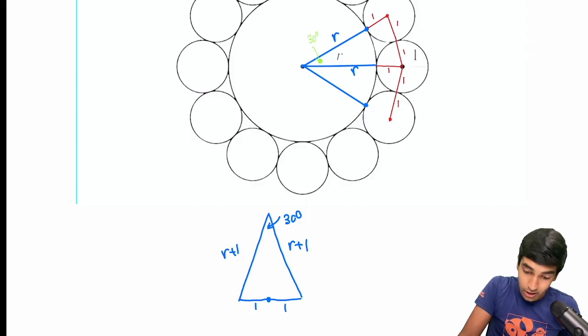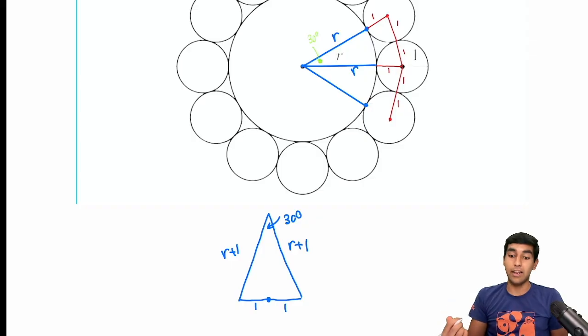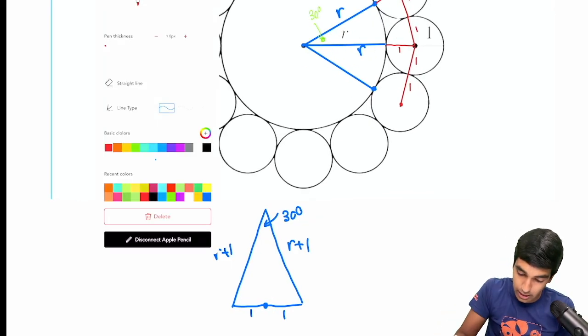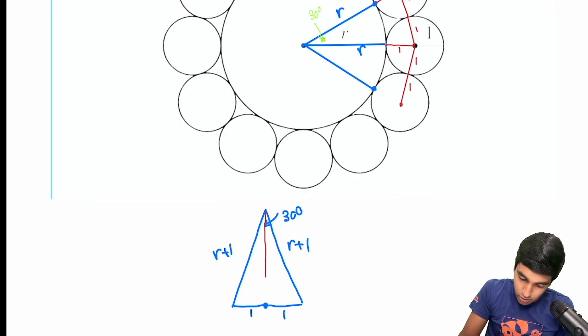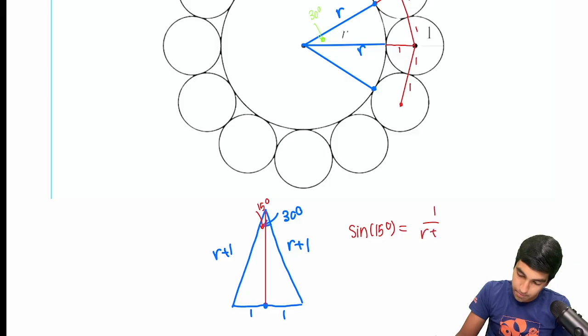The simplest way to finish here would be to use sine of 15. Sine of 15 is always a good value to keep in mind. And let me show you really quickly the solution with sine of 15. So that would be 15 degrees. So sine of 15 degrees is equal to 1 over r plus 1.